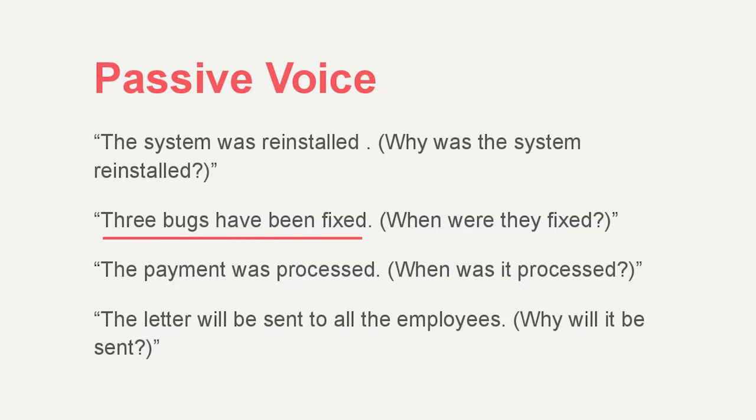Let's take a look at the next example: 'Three bugs have been fixed.' In this example, we are talking about a result, which is why we use present perfect — 'have been fixed.' If I want to make a question, I would say: 'How many bugs have been fixed?' I follow the same rules as in the first example.